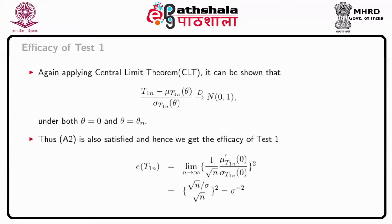By applying the central limit theorem, T_{1n} minus mu(T_{1n}, theta) divided by sigma(T_n, theta) converges to Normal(0,1) in distribution under both theta equals 0 and theta equals theta_n. Thus A2 is also satisfied. Hence the efficacy of test 1 is E(T_{1n}) equal to sigma to the power minus 2.